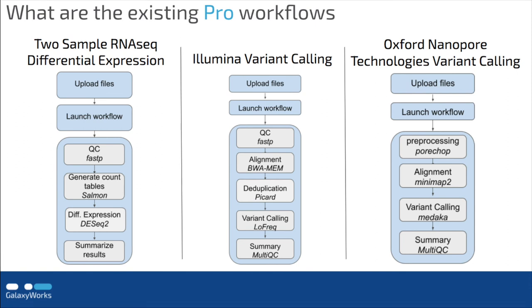RNA-seq reads are used to compare expression levels between samples to determine which genes are differentially expressed between tested conditions. RNA-seq reads are pre-processed by the tool FastP and then analyzed to produce quantitative estimates of transcript abundances using the tool Salmon. From there, the tool DESeq2 compares expression levels between samples in different conditions. Finally, the differential expression tables produced here are used to generate both a filtered differential expression table of only significantly differentially expressed genes and a volcano plot illustrating the log fold change and corrected p-values.